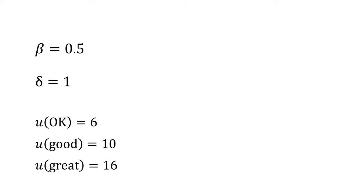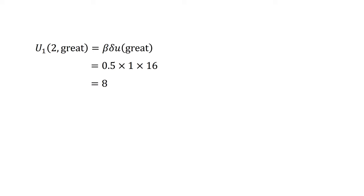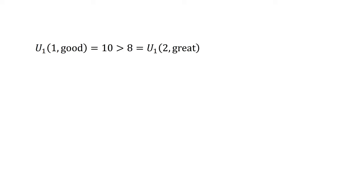To determine their action, they solve by backward induction. First, what will their decision be next week? The discounted utility of the good movie next week, from the point of view of next week, equals the utility of the good movie, which equals 10. The discounted utility of the great movie in two weeks, from the point of view of next week, equals beta*delta times utility of the great movie equals 0.5 times 1 times 16, which equals 8. As 10 is greater than 8, the sophisticated agent can see that they will choose to watch the good movie immediately.